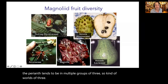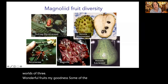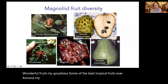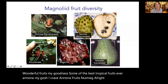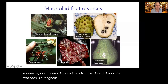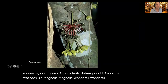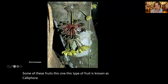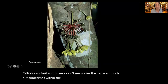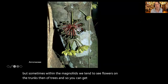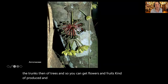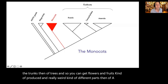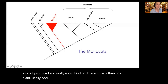Wonderful fruits come from the magnoliids — some of the best tropical fruits ever. Annona, nutmeg, and avocados are all magnoliids. Some of these produce cauliflorous fruits and flowers — flowers produced directly on the trunks of trees, which is a really unusual and cool trait.